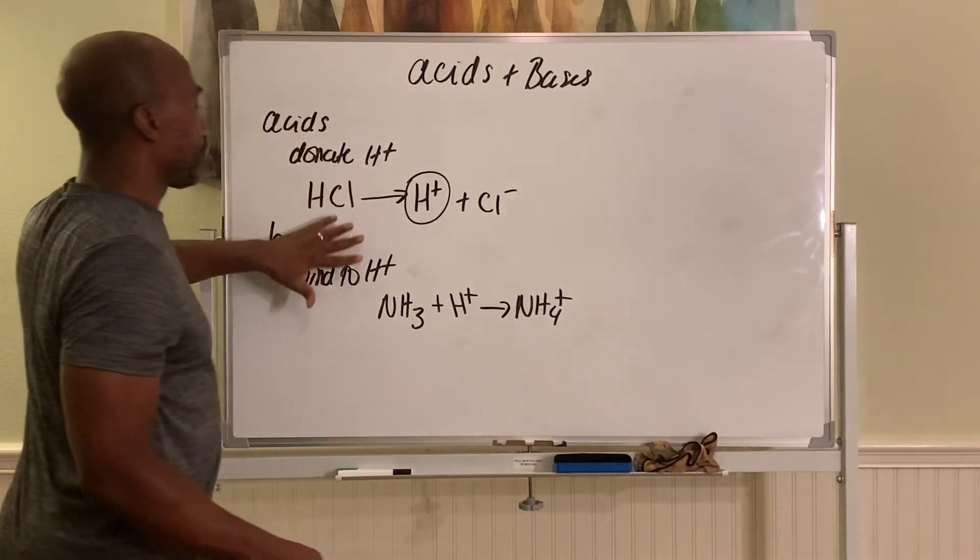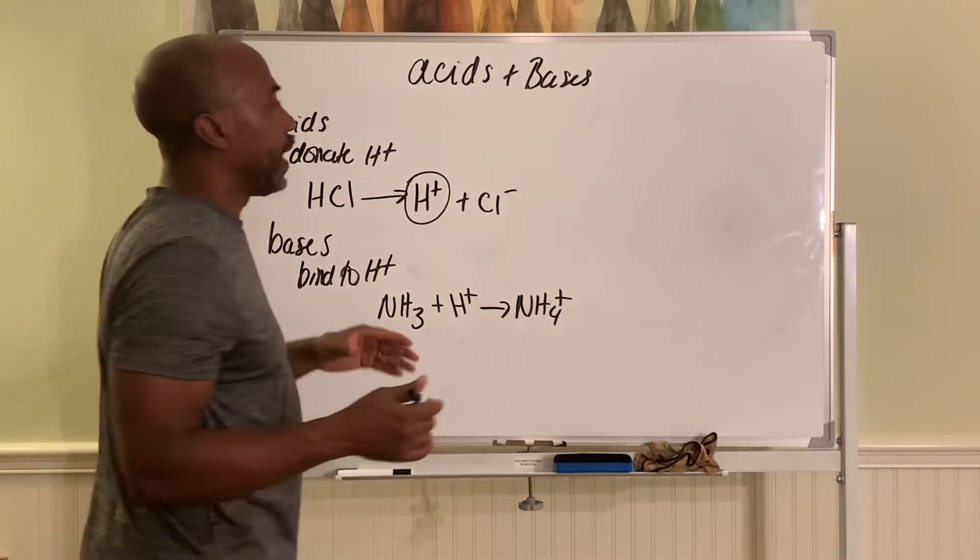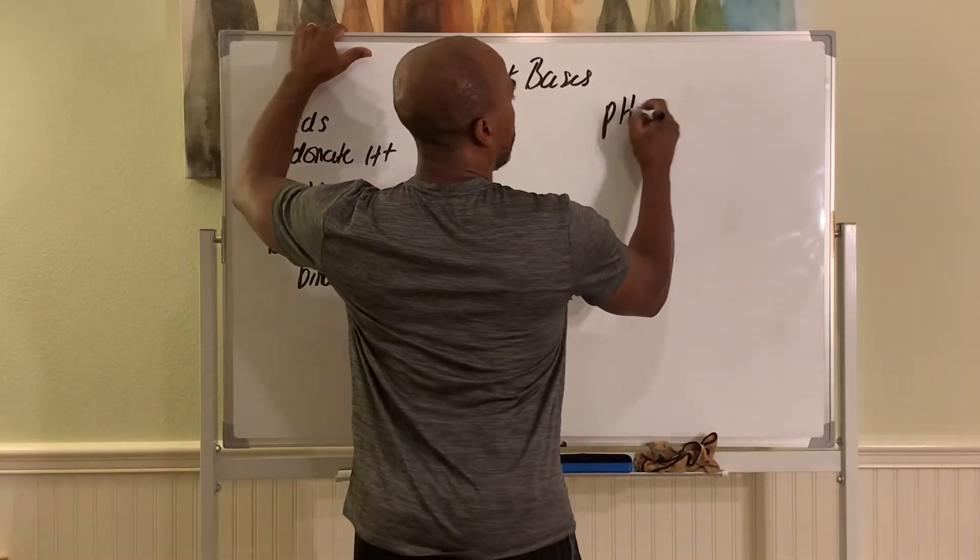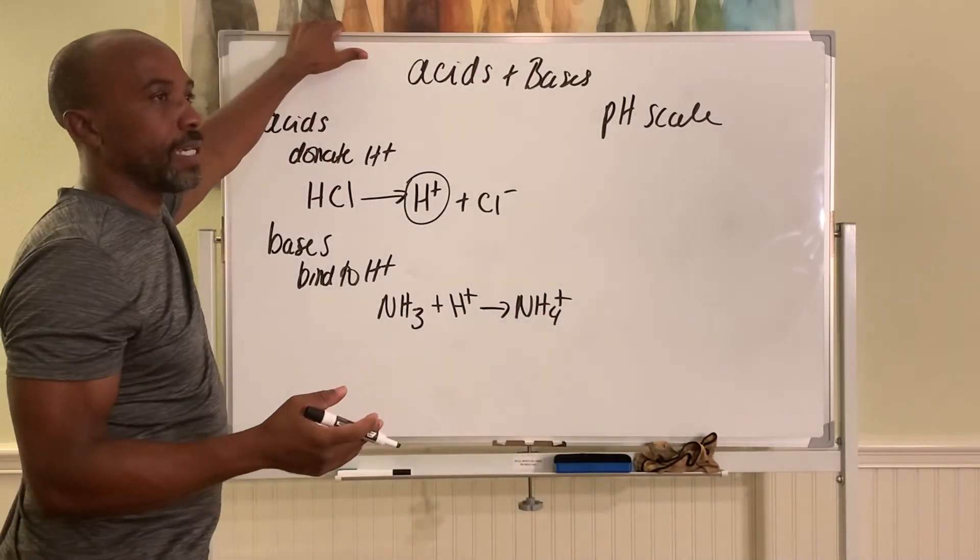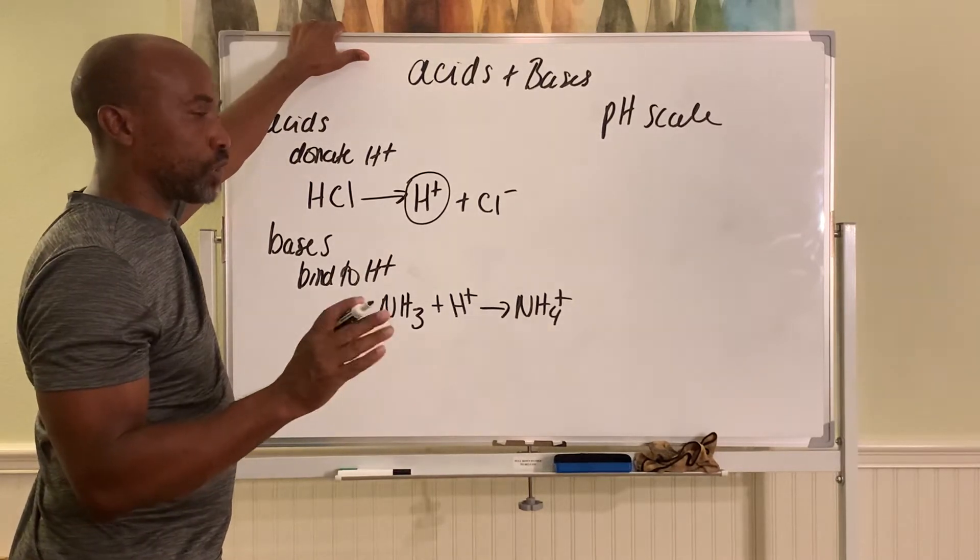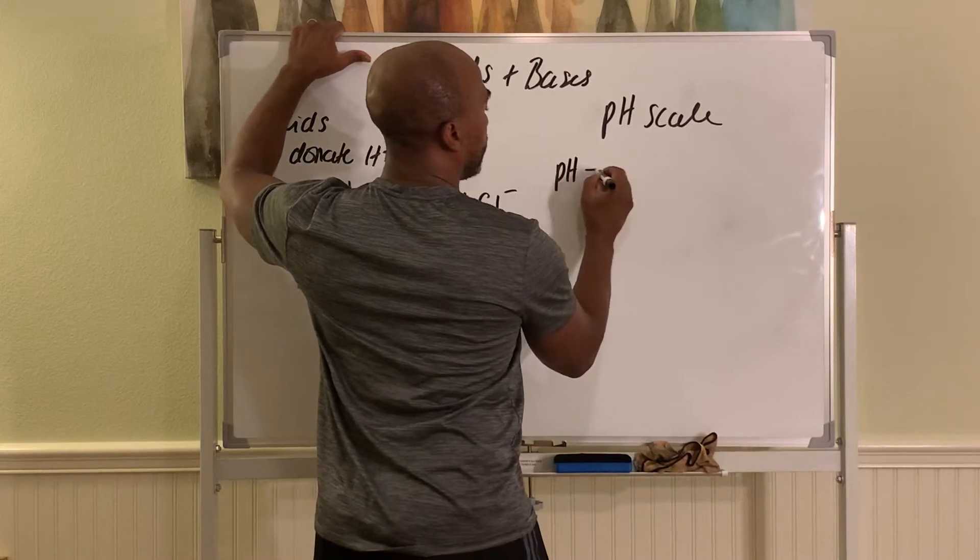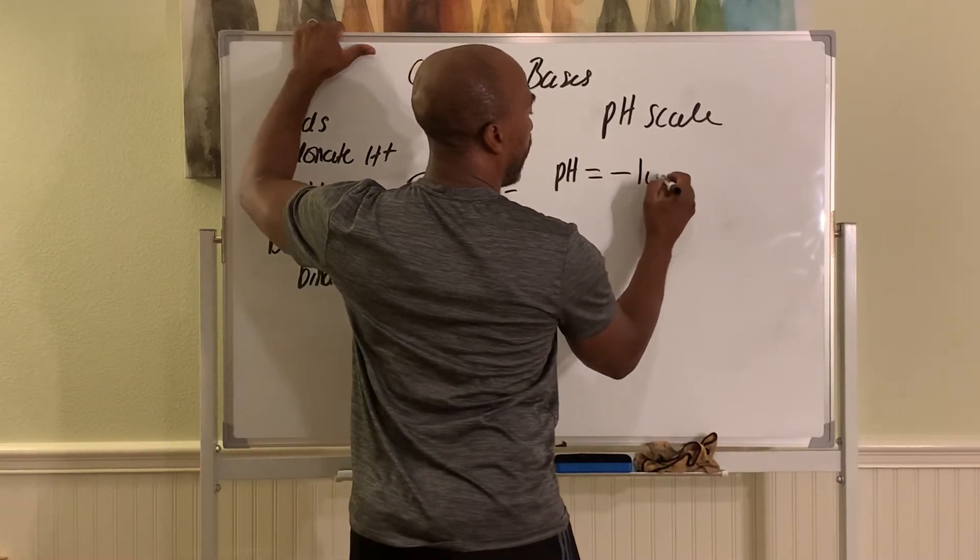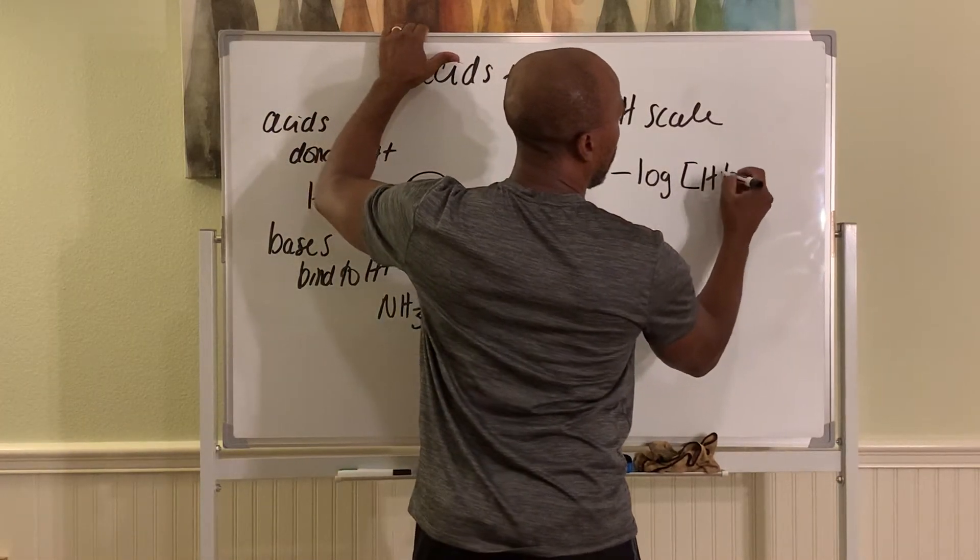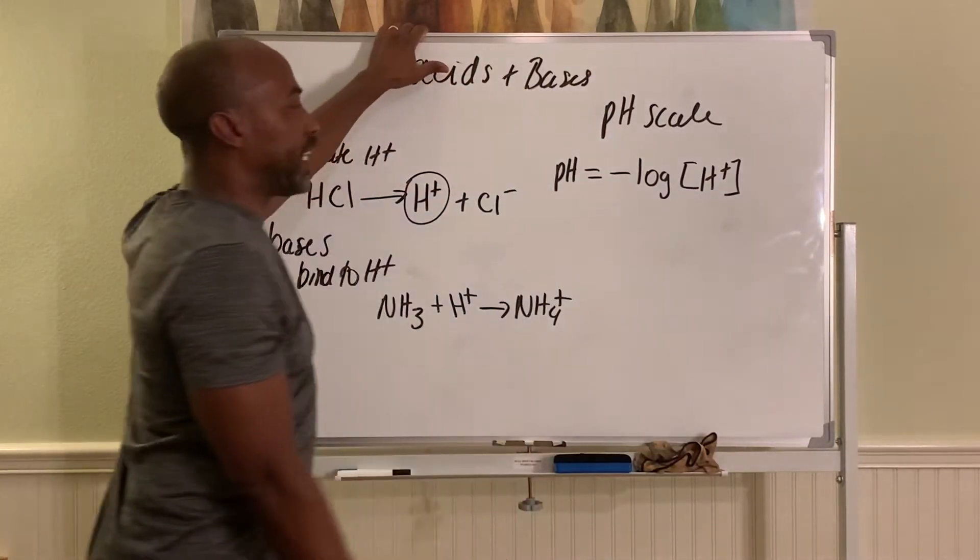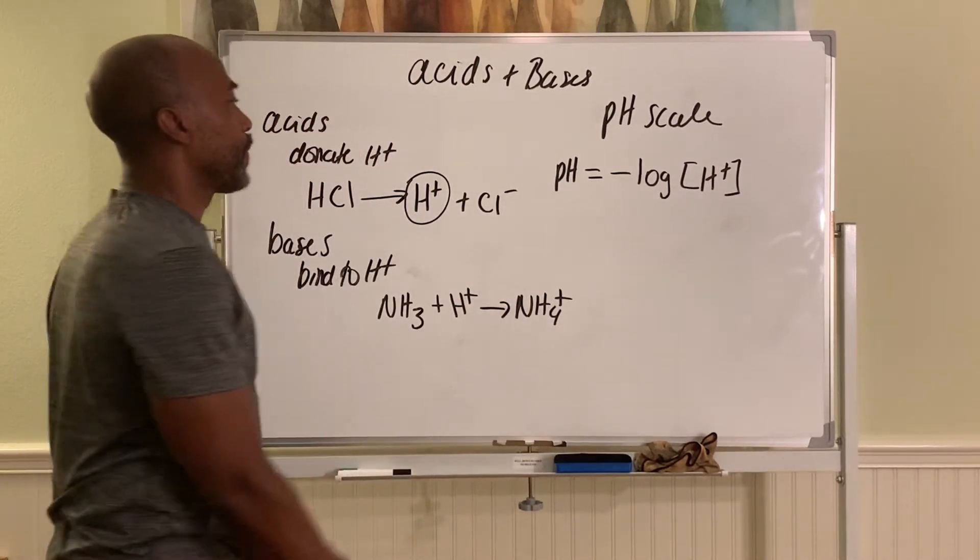Now, we can define the acidity or basicity of a solution based on what's called the pH scale. So this pH scale, or the pH value, indicates the level of acidity of a solution. The pH of any solution is equal to the negative log 10 of the concentration of H plus in solution. So basically pH tracks how much free protons, or H pluses, you have in solution.